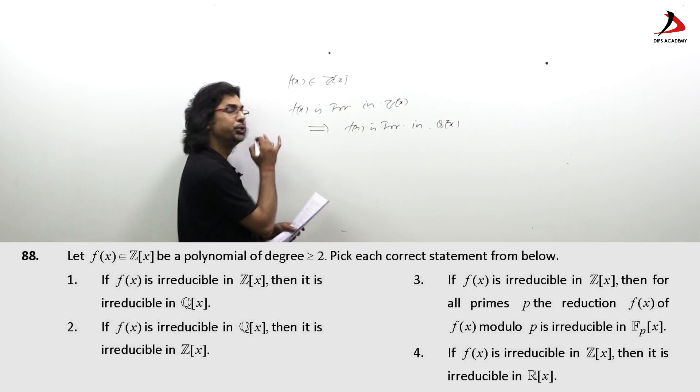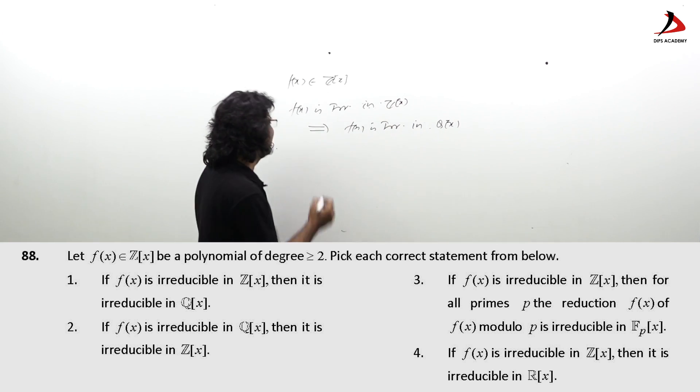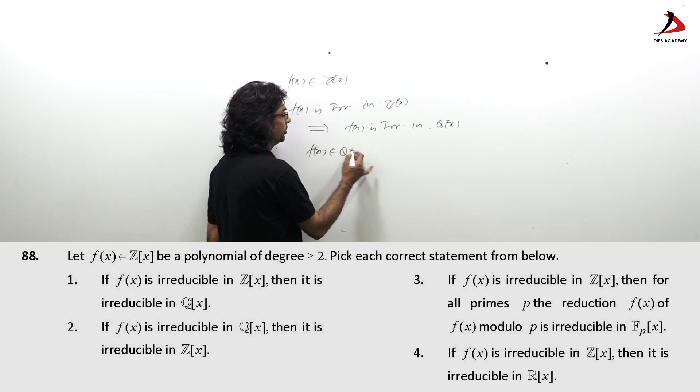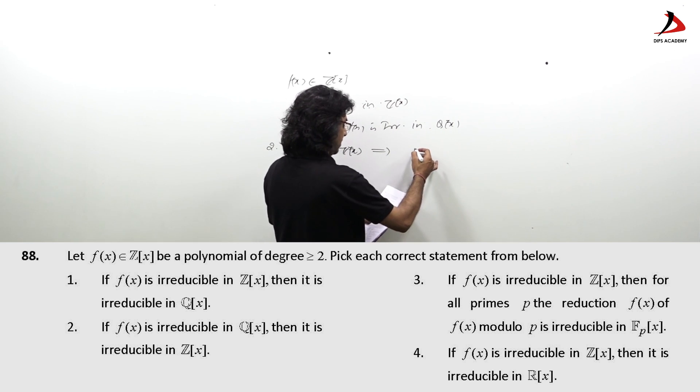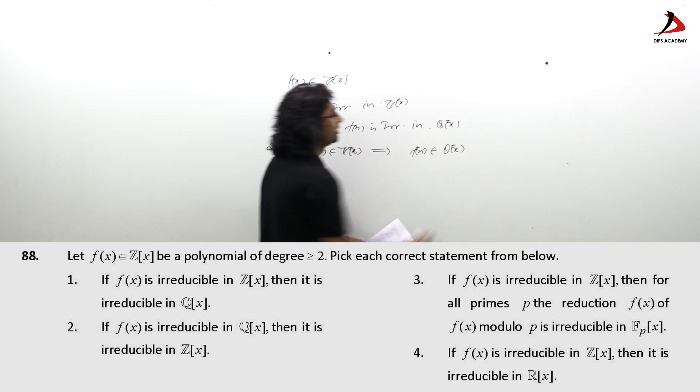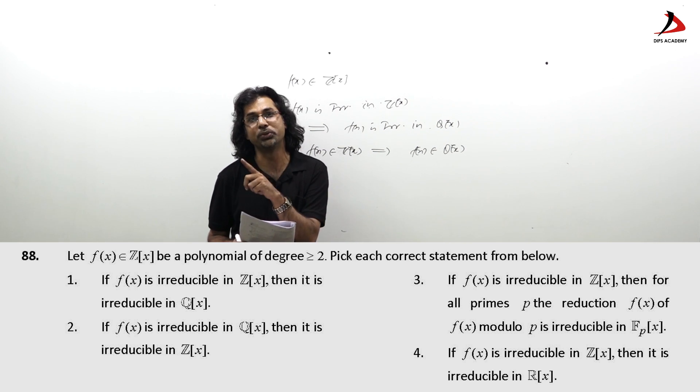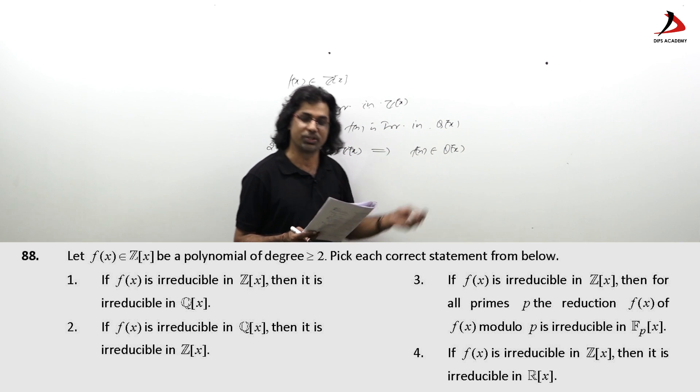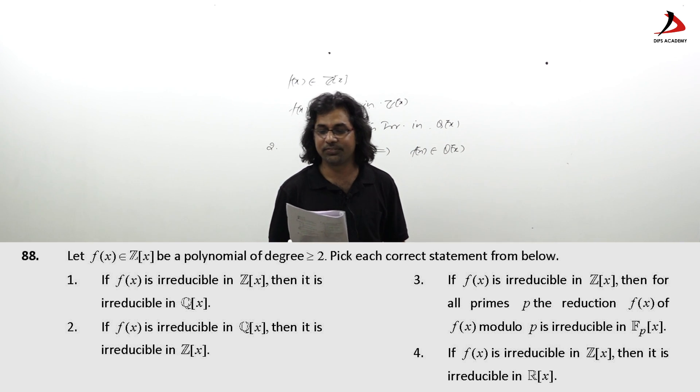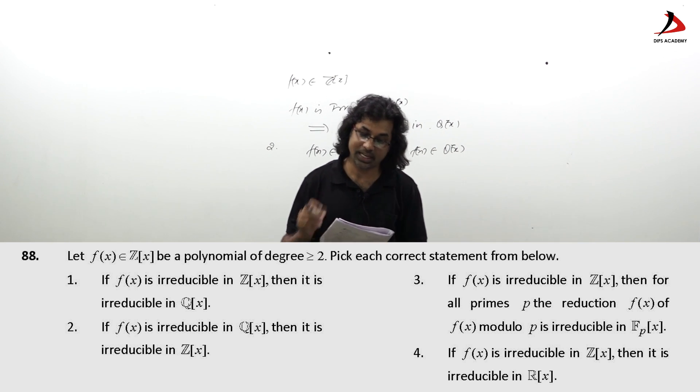Now about the rest of the options, option 2 says if f is irreducible in Q[x] then it is irreducible in Z[x]. If f(x) belongs to Z[x] implies f(x) belongs to Q[x]. If f cannot be expressed as product of two positive degree polynomials over Q, so it cannot be expressed as over Z, because if it is expressed as product of two positive polynomials over Z definitely the members will be over Q as well. So option 2 is also correct. For this question 88 first and second options are correct.